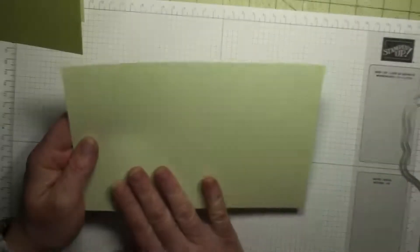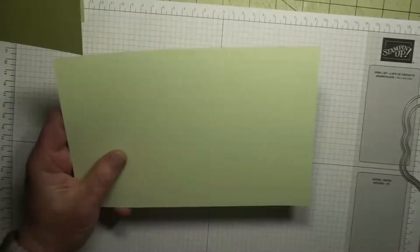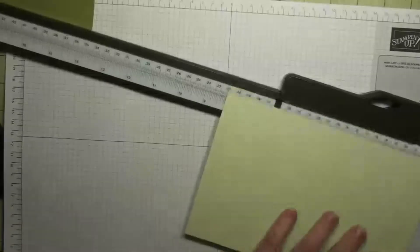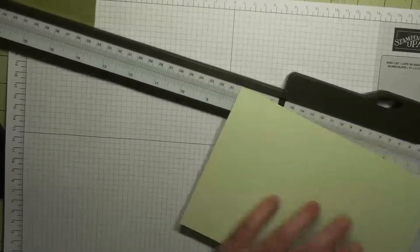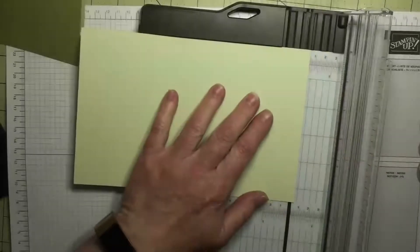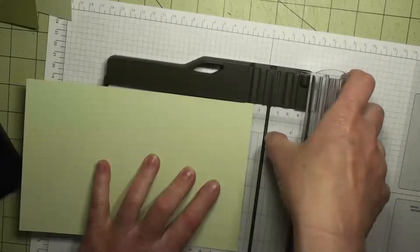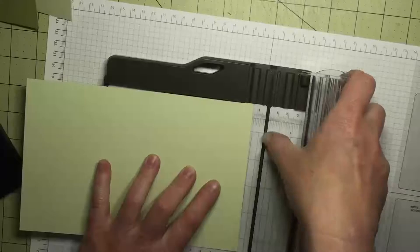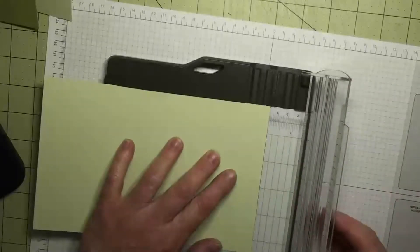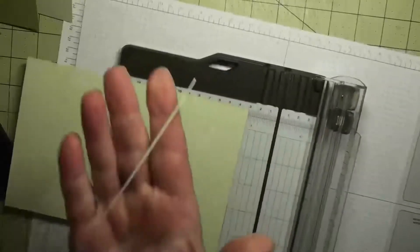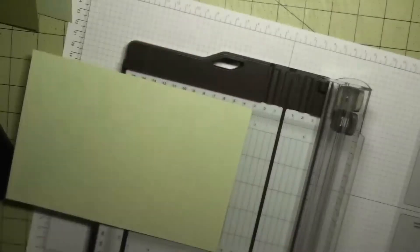So we're going to take this piece of eight and a half by five and a half card stock, and to get it to lay correctly, I am going to just shave off a sixteenth of an inch, and basically that's the width of this dark part on my trimmer. And that's how much I shaved off. But that will make all the difference for letting this lay nicely.